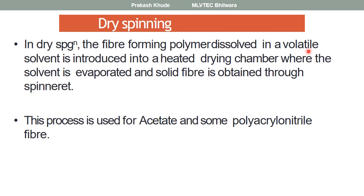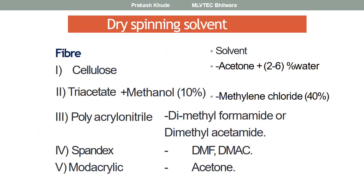In dry spinning systems, all polymers need to be dissolved into a certain volatile solvent and then introduced into a heated drying chamber where the solvent is evaporated. The solidification of the filament takes place by means of hot air. This process is basically used for acetate or some polyacrylonitrile fibers.